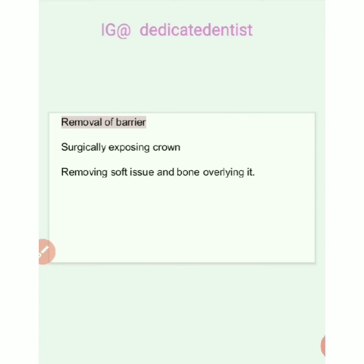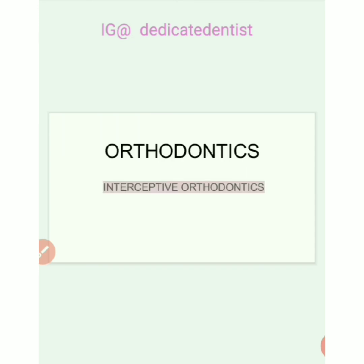When a succedaneous tooth is not able to erupt, it may be because the overlying soft tissue is very dense or the overlying bone is very thick. We surgically expose the crown by excision — removing the soft tissue and bone overlying it. These were the procedures carried out in interceptive orthodontics.